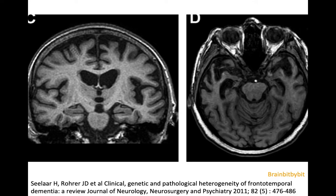Then there is a logopenic variant where the atrophy is more posterior in the temporal lobe towards the angular gyrus. The angular gyrus is the three-country border point of the temporal, the occipital, and the parietal lobe — important for speech, hearing, and vision — and if you have the logopenic variant you have loss of words.